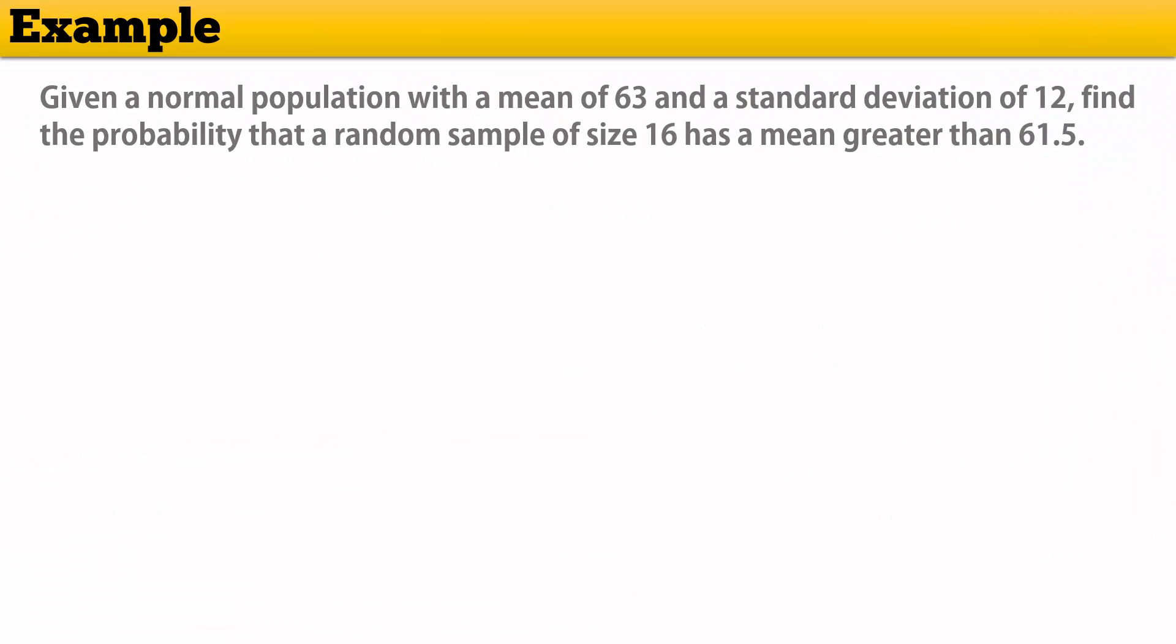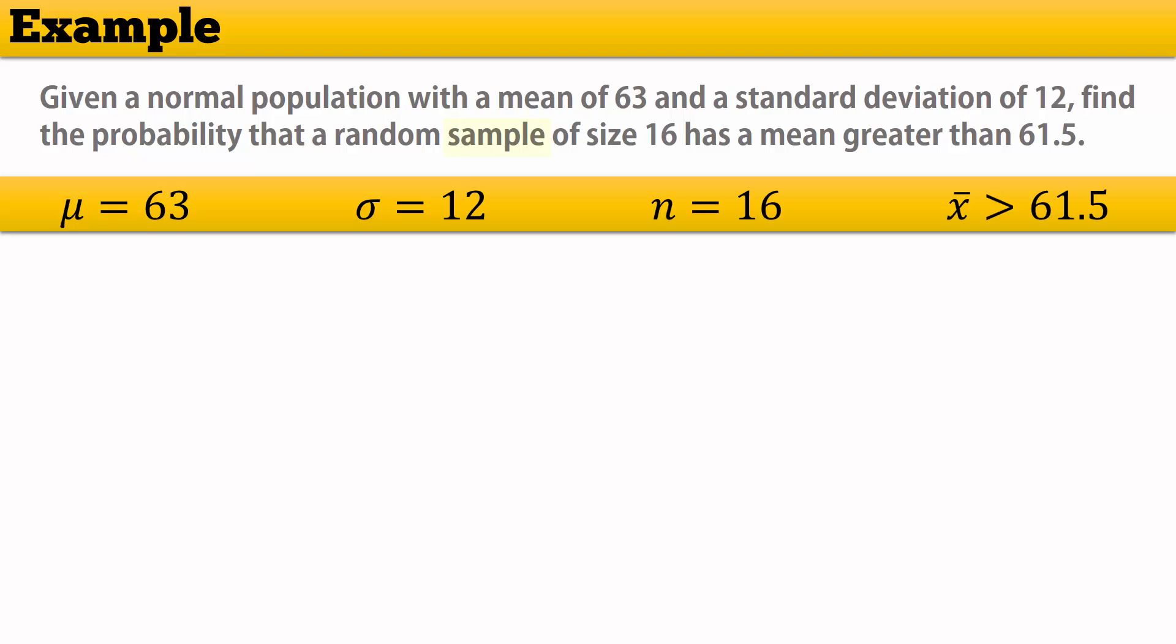Let's look at an example. Given a normal population with a mean of 63 and a standard deviation of 12, we want to find the probability that a random sample of size 16 has a mean greater than 61.5. Note that we have a sample here, with sample size provided. And we're finding the probability for a sample mean, and not for an individual score.